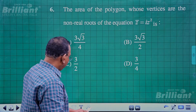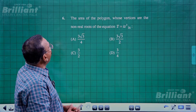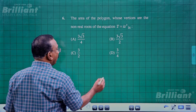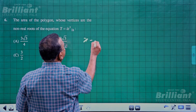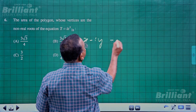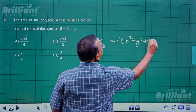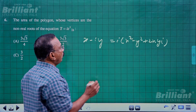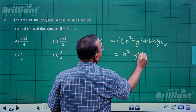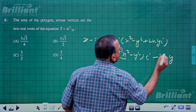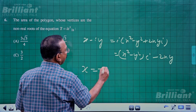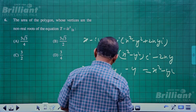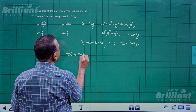Question 6: Find the area of the polygon whose vertices are the non-real roots of z̄ = iz². Writing z = x + iy, we have z̄ = x - iy and iz² = i(x² - y² + 2xyi) = (x² - y²)i - 2xy. Comparing real and imaginary parts: x = -2xy and -y = x² - y².